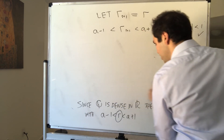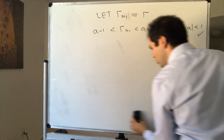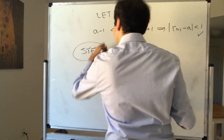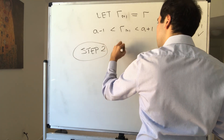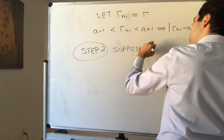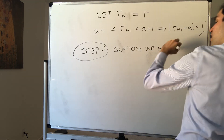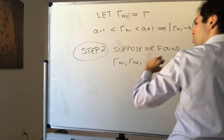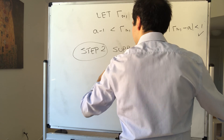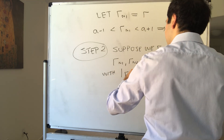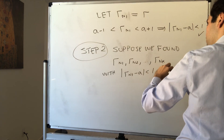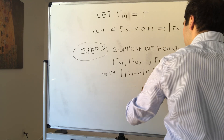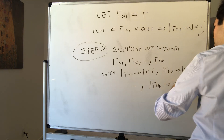Now comes the more interesting inductive step. Step 2: suppose we have found the first k terms r_{n_1}, r_{n_2}, …, r_{n_k} satisfying: |r_{n_1} − a| < 1, |r_{n_2} − a| < 1/2, …, |r_{n_k} − a| < 1/k.